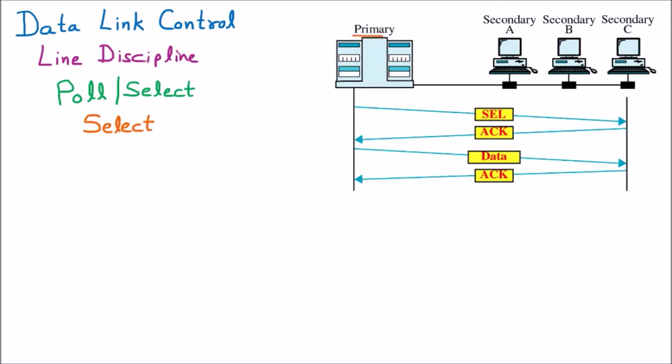Here we have the primary station which has full control over everyone. There are a few secondary stations — secondary A, secondary B, and secondary C. These three secondary systems are totally under the control of the primary. Primary will say when to send, and only then they will send.